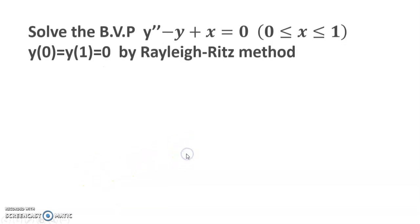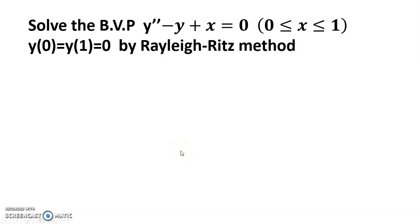Hello dear friends, welcome to my channel. Today's discussion is BVP y double dash minus y plus x equals to zero, and y(0) equals to y(1) equals to zero by the Rayleigh-Ritz method solution.